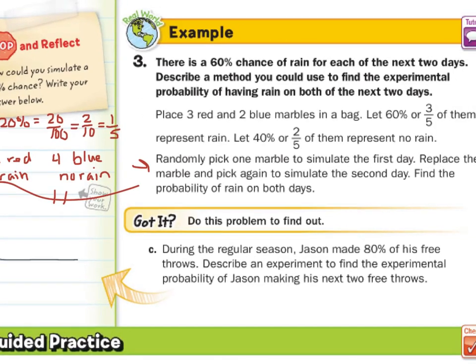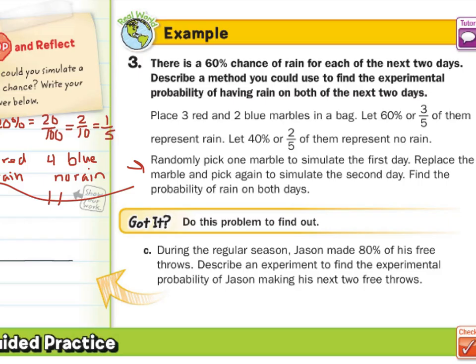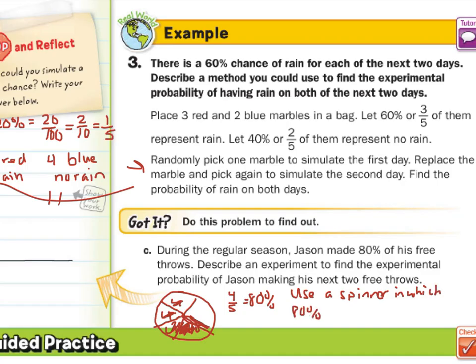For our question, during the regular season, Jason made 80% of his free throws. Describe an experiment to find the experimental probability of Jason making his next two free throws. What if we had a spinner? And this was divided into five sections, in theory, five equal sections. But four of those five sections represented his chance of making a free throw, since four-fifths is equal to 80%. To write this out, we could say use a spinner in which 80% or four-fifths, since they're equivalent, represents making a free throw.